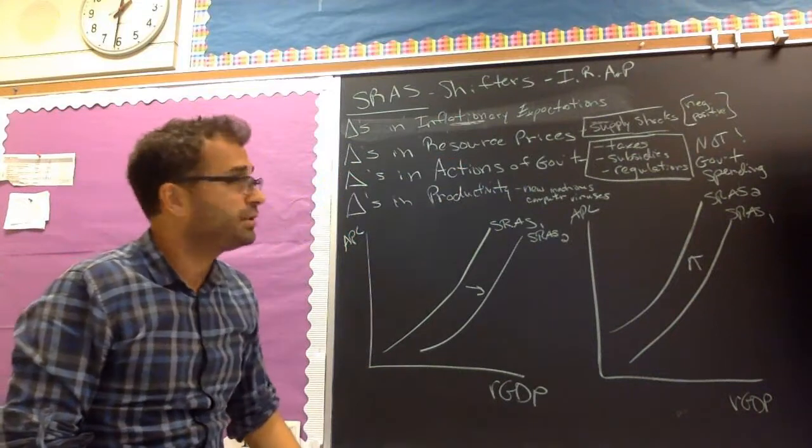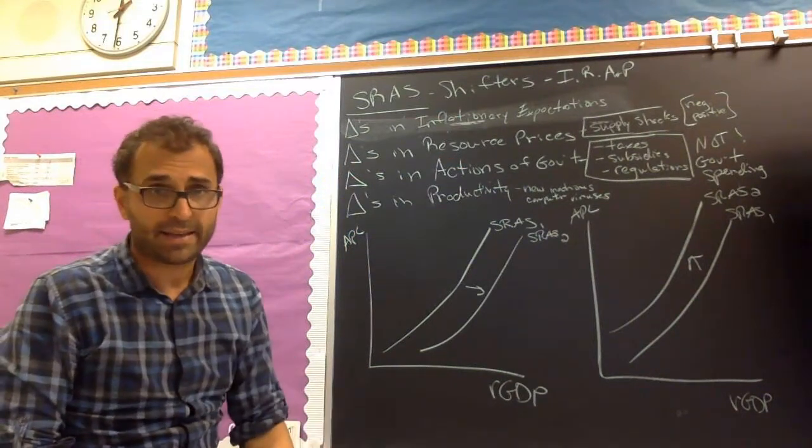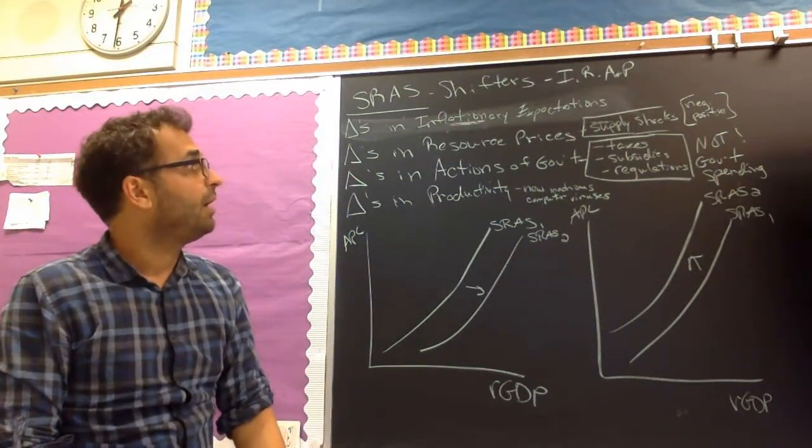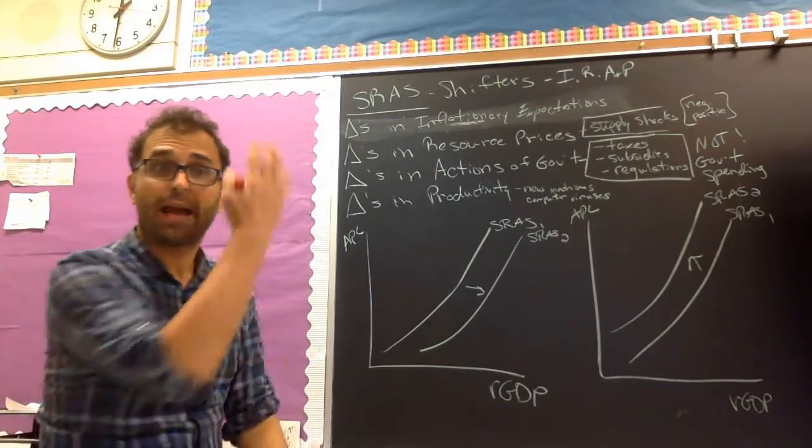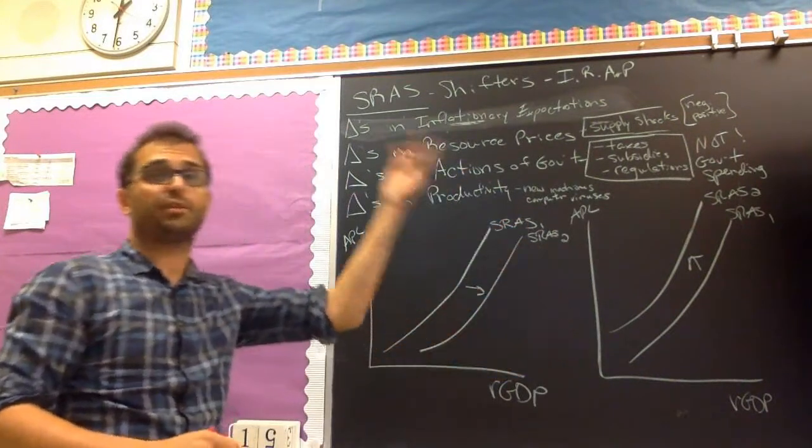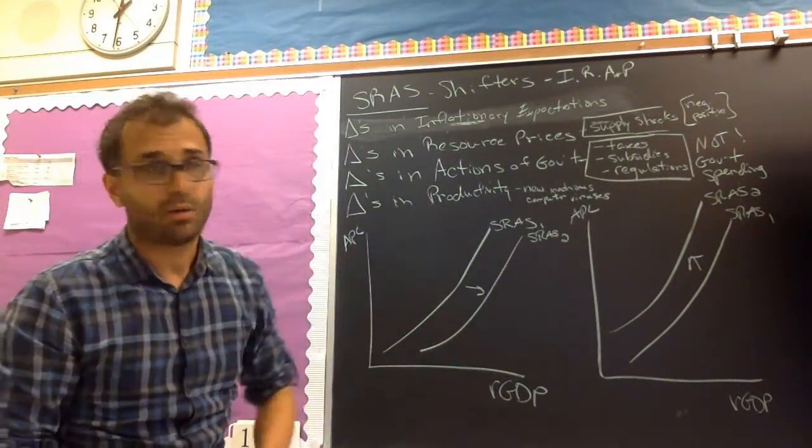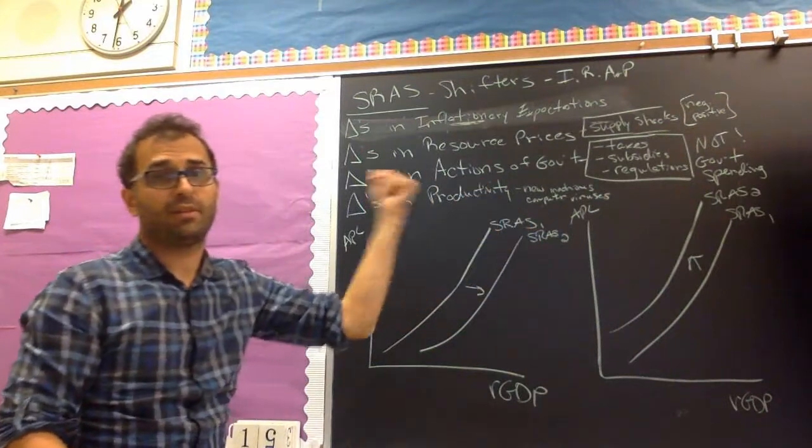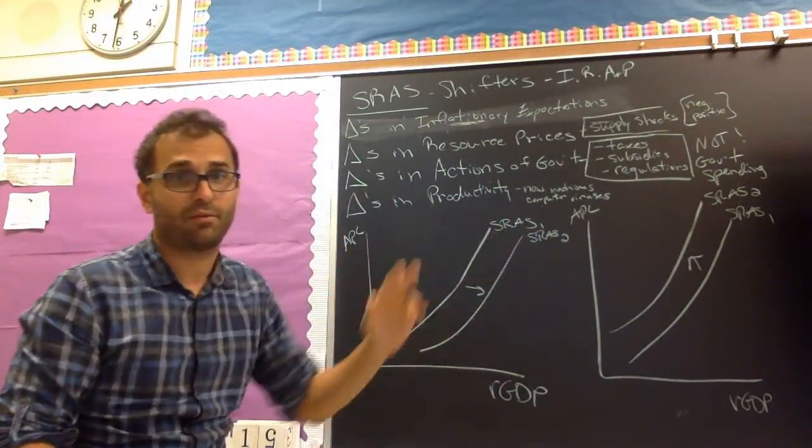Changes in resource prices. You know what these are. These are supply shocks. Negative and positive supply shocks. If the price of labor goes down, aggregate supply shifts to the right. Price of labor goes up, aggregate supply shifts to the left. The price of oil goes up, aggregate supply shifts to the left. Price of oil goes down, aggregate supply shifts to the right.